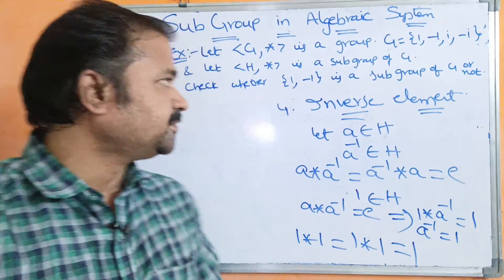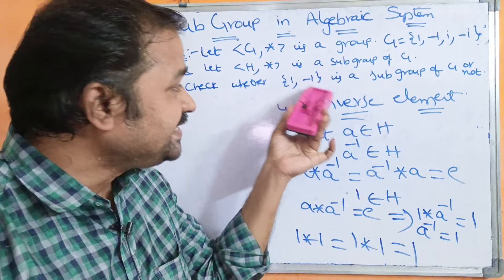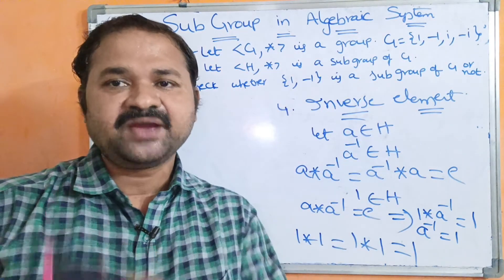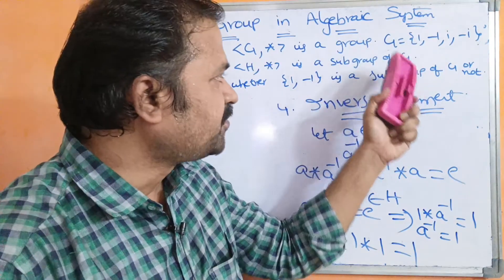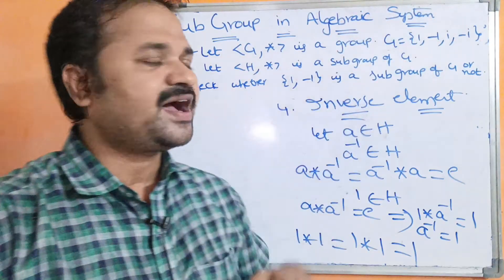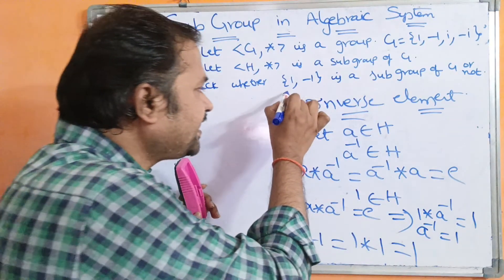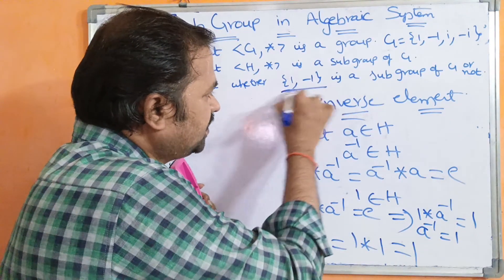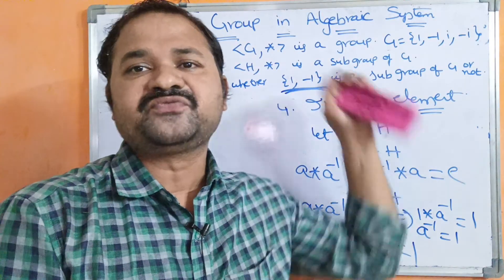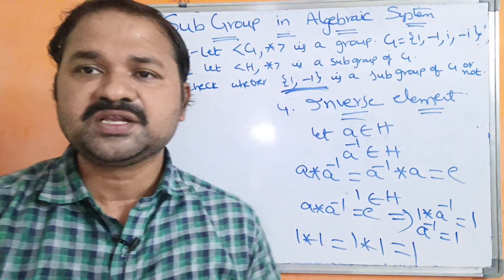With this, we can say that the subgroup {1, -1} is a subgroup of this group. Likewise, in examinations, questions may involve subgroups like {1, i}, {i, -i}, or {-1, -i}. Here we confirmed that {1, -1} is a subgroup of this group. This is about subgroups in algebraic systems.